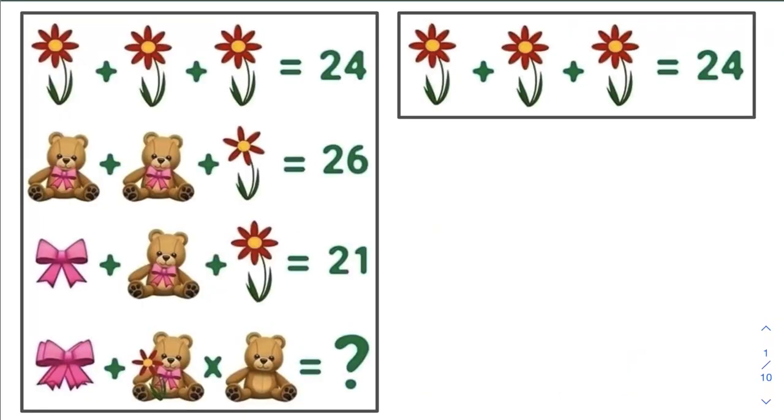Let's begin with line 1. We have three identical flowers added together equal to 24. So to find the value of each flower, we need to divide 24 by 3, which is equal to 8. This means that each flower has a value of 8 because 8 plus 8 plus 8 is equal to 24.